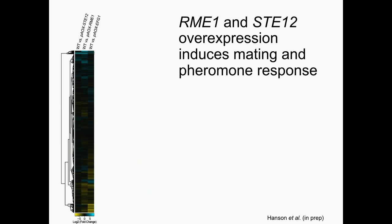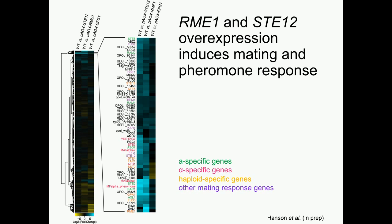Finally, RNA-seq on these overexpression strains showed that when you overexpress RME1 or STE12, you get a very robust induction of the mating response — including a subset of genes involved in mating and pheromone responses. The EFG1 overexpression strain, however, does not give you this same effect and instead regulates nitrogen response genes.